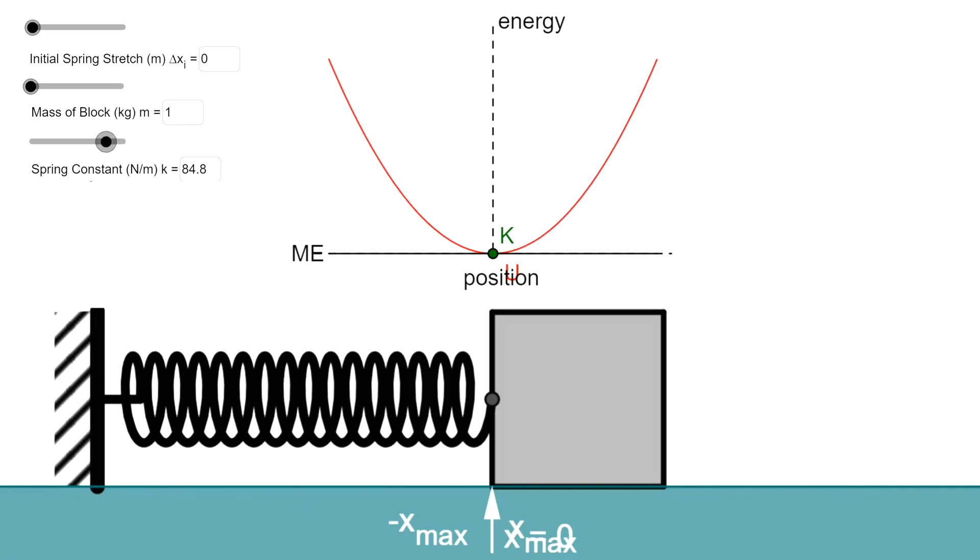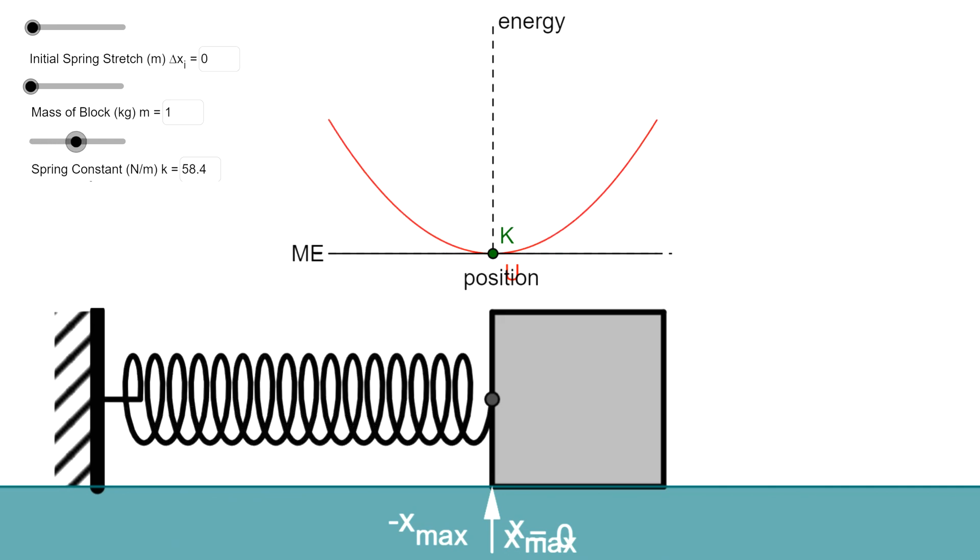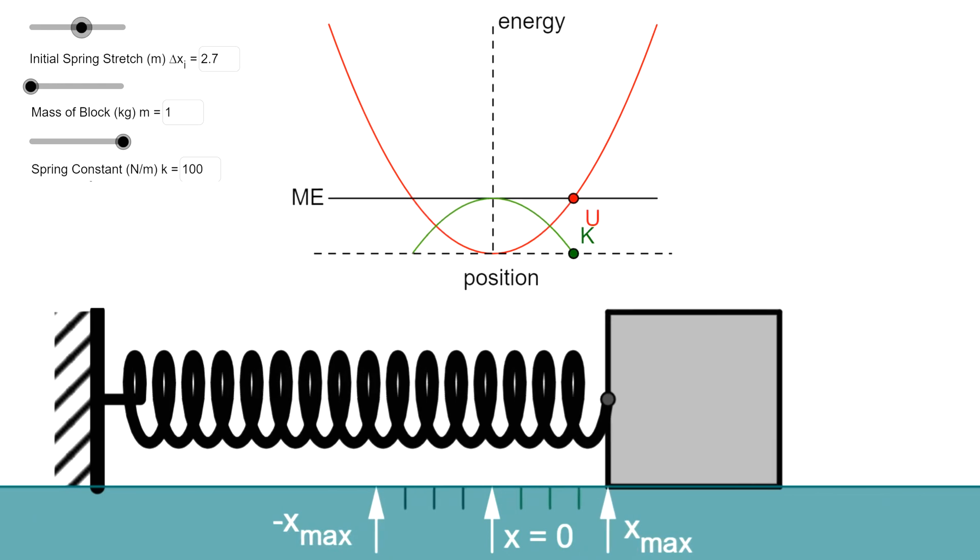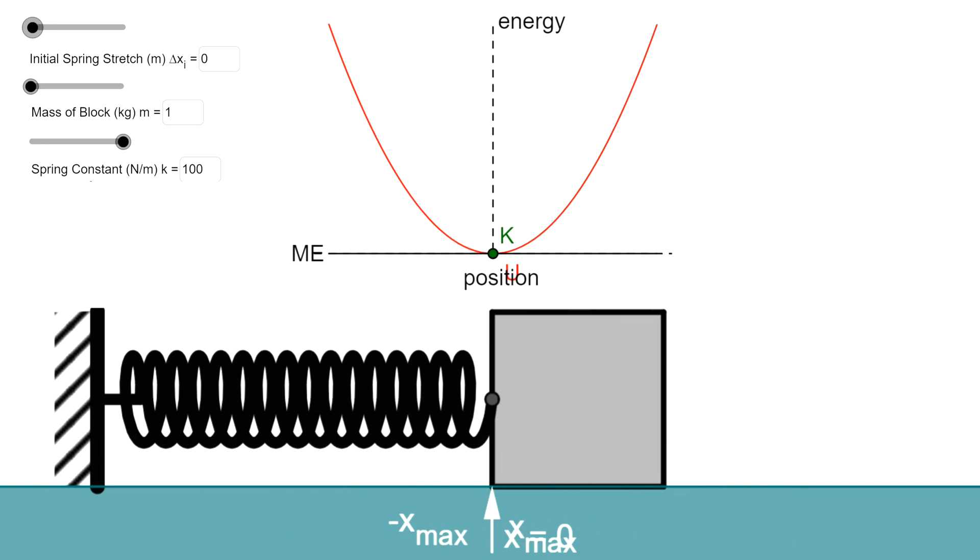All right, here we have an energy versus position graph for a box on a spring. You can see that when we change the spring constant, the shape of the graph changes, and when we increase the amount that it's stretched, we are raising the total energy that's actually in the spring system.